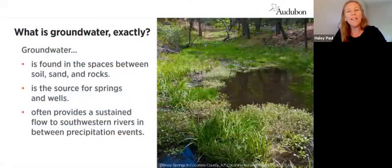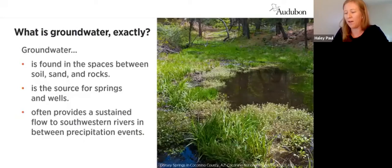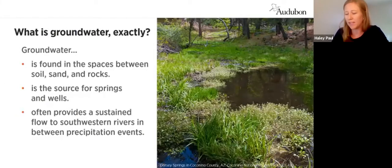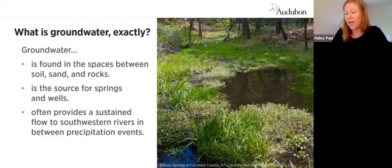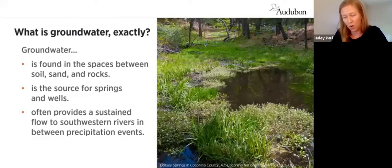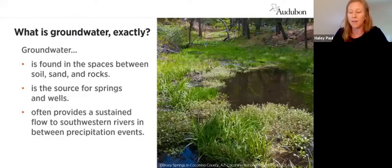So what is groundwater exactly? Groundwater is the water that is found in the cracks, crevices, and spaces between soil, sand, and rock underground. It is the source of water for springs and wells, and groundwater allows some rivers to flow year-round by providing a base flow of water in between snowmelt runoff and rain events. Base flow is water that seeps into the river or stream from groundwater.